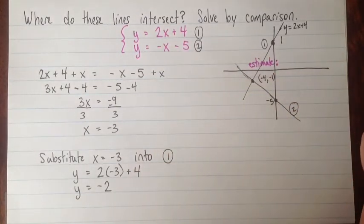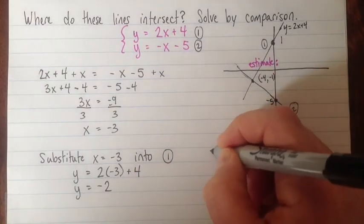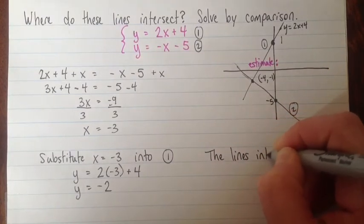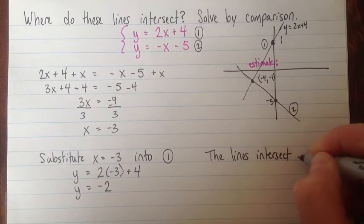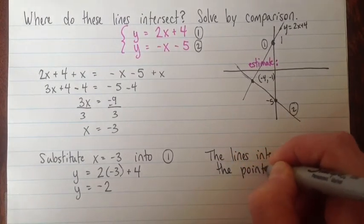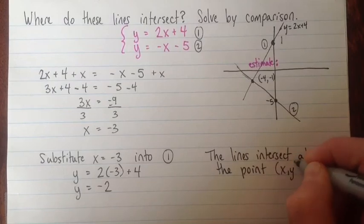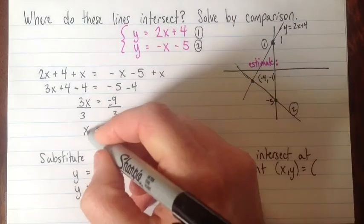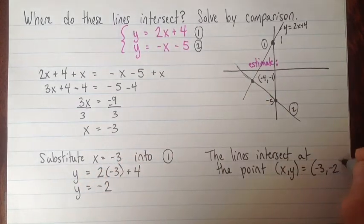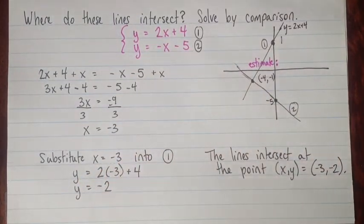Okay, so now we're done except that we have to write a quick conclusion. The lines intersect at the point xy equals negative 3, negative 2. Okay, that's it. Good luck with it.